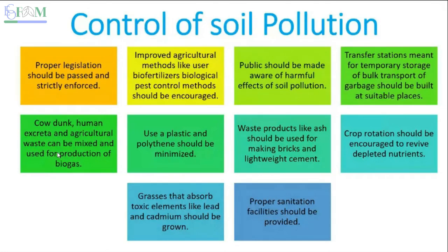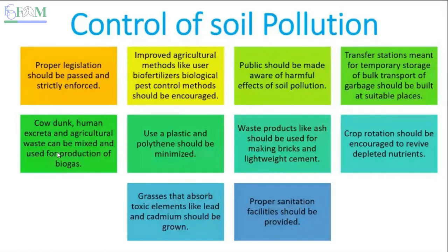Another control measure is improving agriculture methods — reducing the use of chemical fertilizers and increasing the use of bio-fertilizers. Biological pest control is also important: nature provides control of every species by another species, just as carnivores control herbivore populations. Similarly, certain pests can be controlled by other organisms. The use of biological pest control and bio-fertilizers can drastically reduce soil pollution.